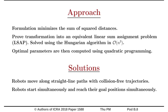We prove that this assignment with variable goal formation problem can be transformed into an equivalent linear sum assignment problem. This can be solved using the Hungarian algorithm in O(n³) time. The optimal parameters are then computed using quadratic programming.